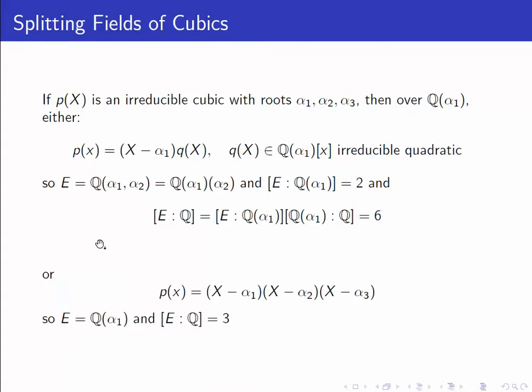The other case that can happen is that p of x splits completely over this extension field Q alpha 1 into a product of linear polynomials. In this case, alpha 2 and alpha 3 are both in the field generated by alpha 1. So this is the splitting field and the degree of E over Q is 3.